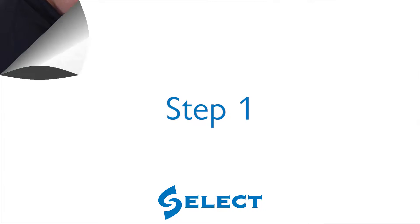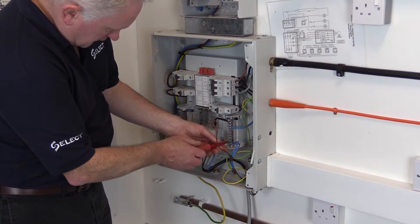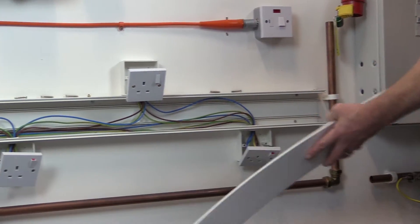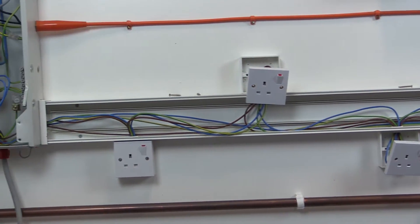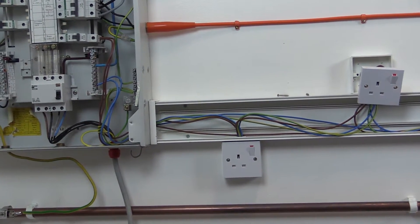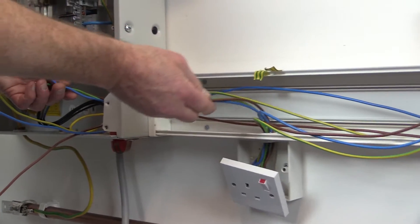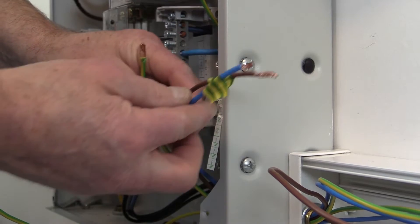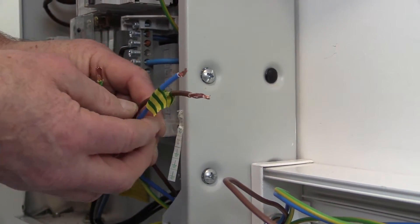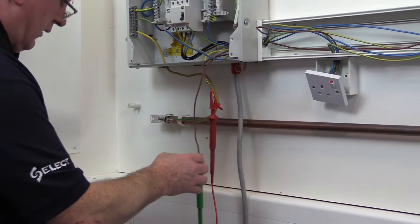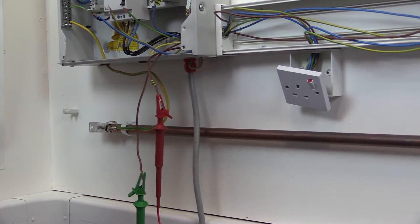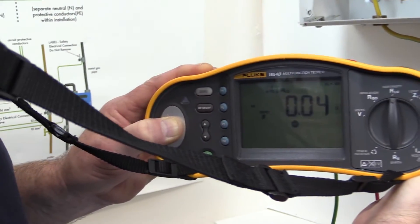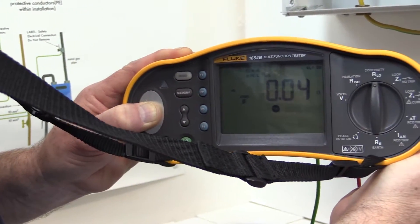Step one: disconnect the line, neutral, and circuit protective conductors of the ring final circuit at the distribution board. It may be advantageous at this stage to identify the incoming and outgoing conductors of the ring final circuit, as this is very helpful when carrying out steps 2 and 3. At the distribution board, measure the resistance between the line conductors — this is called R1 — the neutral conductor, called Rn, and the CPCs, called R2.